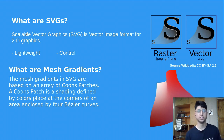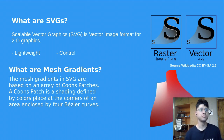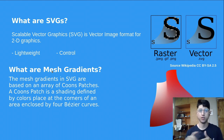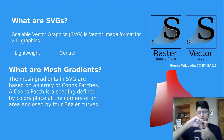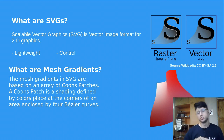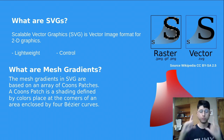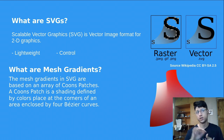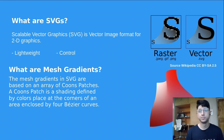So that is SVGs. Next, what are mesh gradients? By definition, mesh gradients in SVG are based on an array of Coons patches — basically a grid of Coons patches. A Coons patch is formed when you have four Bezier curves, place four colors on each corner, and then interpolate between them — the surface you get is a Coons patch.